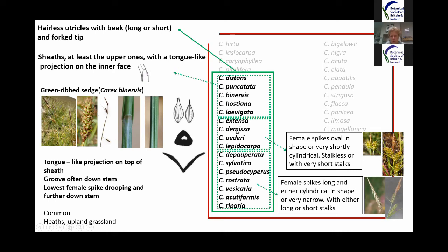Within the beaked species, you can further separate by female spike shape: some have rounded, short and stumpy female spikes, others have long, thin and often stalked, more cylindrical spikes. These are the key shapes to distinguish sub-groups within the beaked, hairless utricle species.